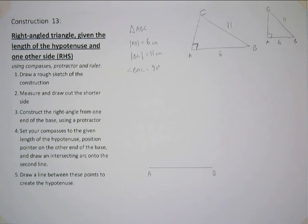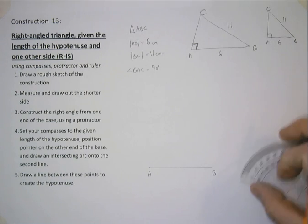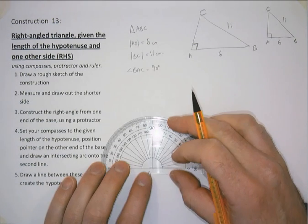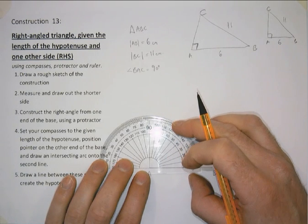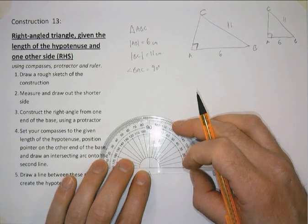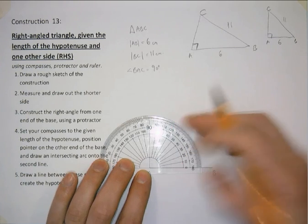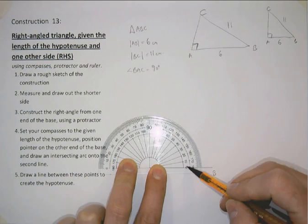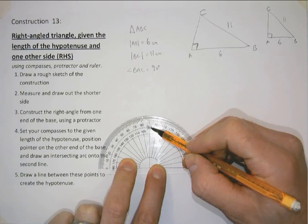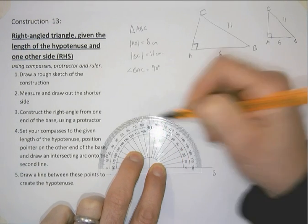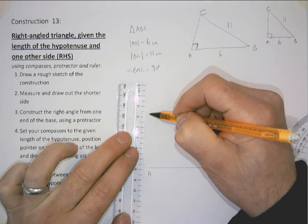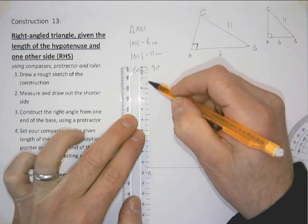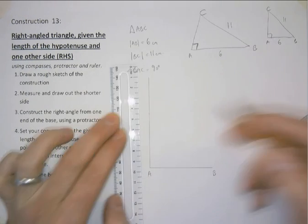Next thing we are going to do is construct our right angle at point A. Line up the protractor. Starting from 0, inside scale, moving around to 90 degrees. That's what the right angle is. Placing a marker there. For us now to connect up that marker with A. Construction line, down to A.